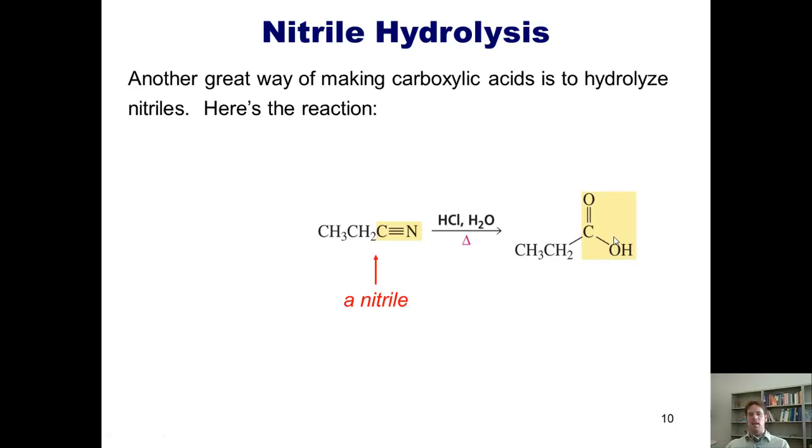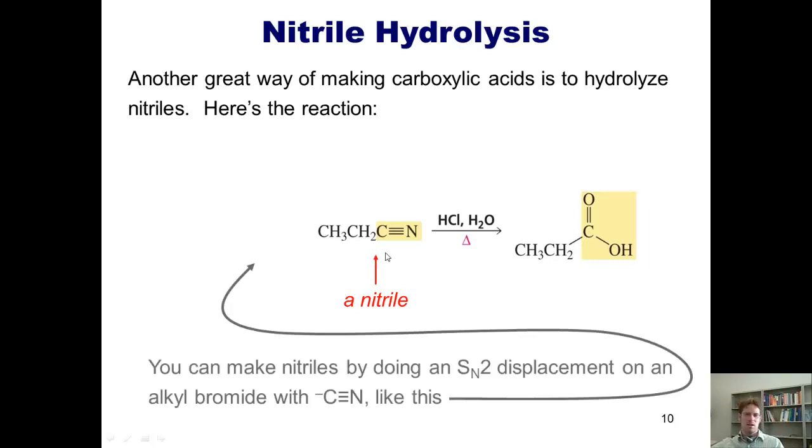Another great way of making carboxylic acids is to hydrolyze nitriles. Here's the overall reaction. If I take a nitrile, as shown here, and I treat it with acid, water, and heat, I can convert this carbon from a nitrile carbon into a carboxylic acid carbon. You guys might have forgotten from earlier how to even make a nitrile. A very great way of doing it is by taking an alkyl bromide and treating it with cyanide nucleophile. The negatively charged carbon comes in, kicks off the bromide leaving group, and gives you your nitrile. So this is an excellent way to take alkyl bromides and convert them in two steps to carboxylic acids.